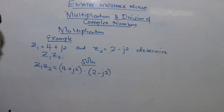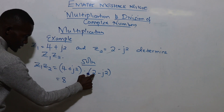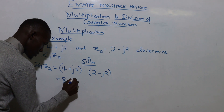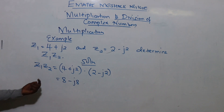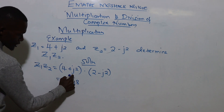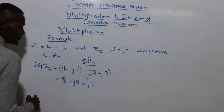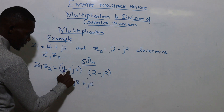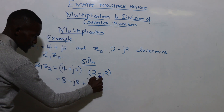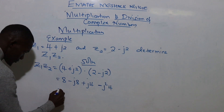The first term opens the bracket: 4 times 2 gives 8, and 4 times negative j2 gives negative j8. The second term: j2 times 2 gives plus j4, then j2 times negative j2 gives negative j squared times 4. Note: positive times negative gives negative, and j times j gives j squared, and 2 times 2 gives 4.